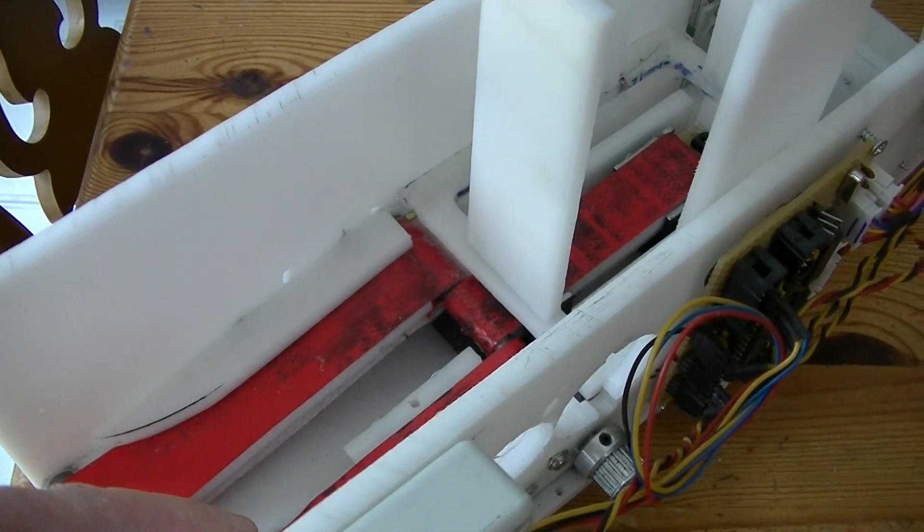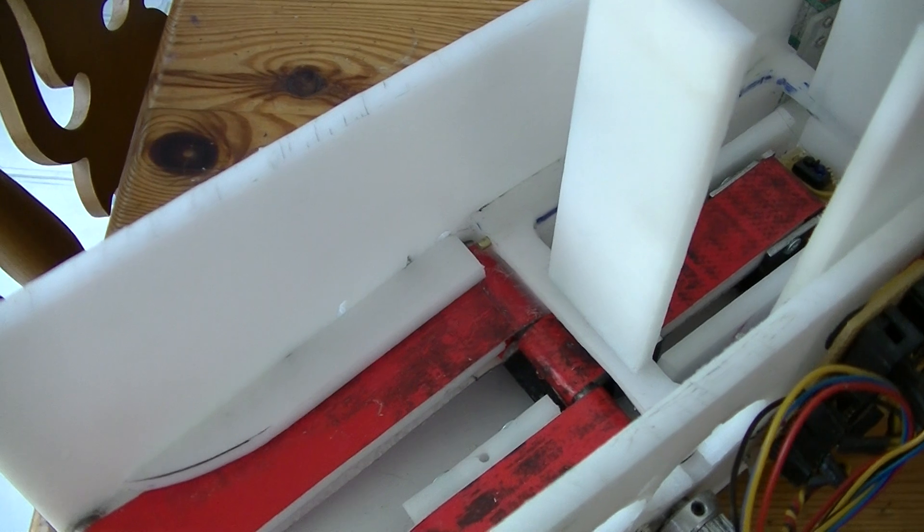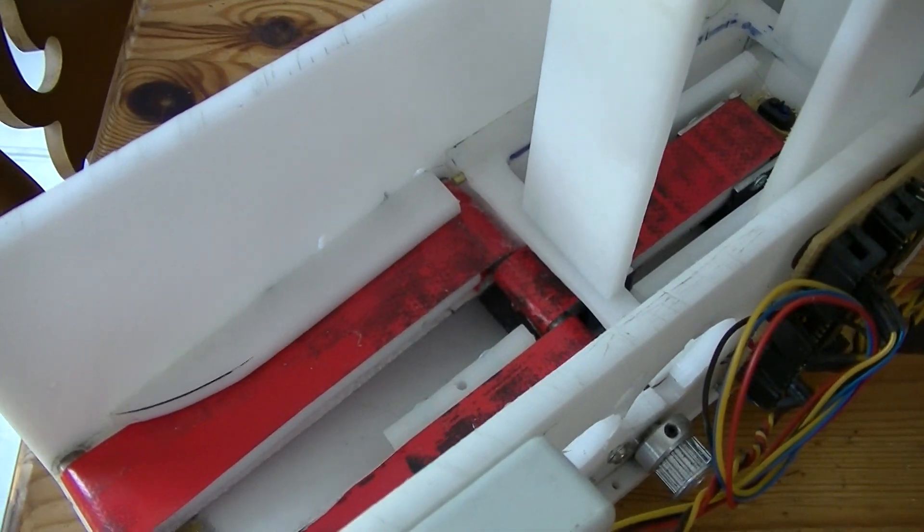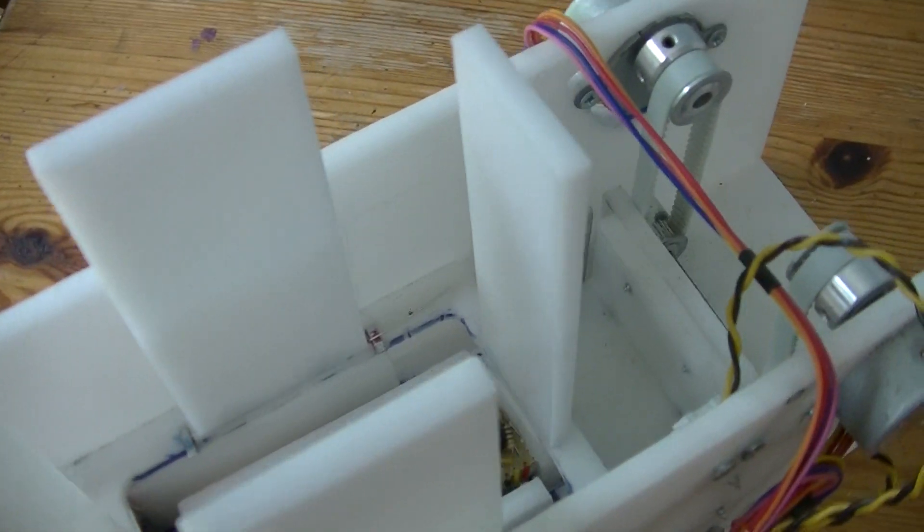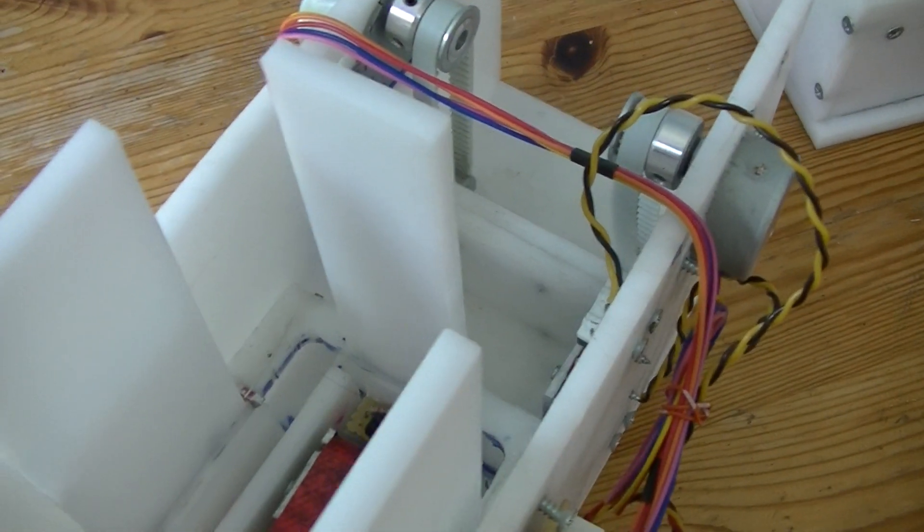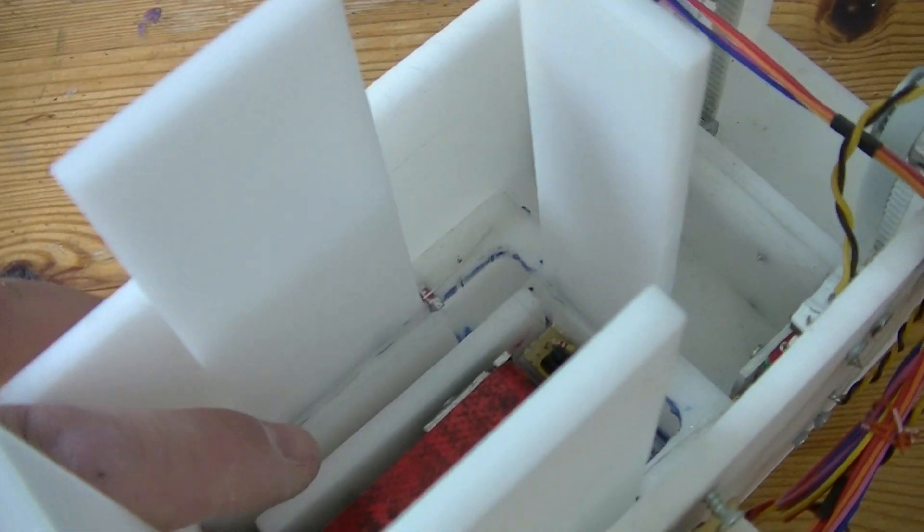Basically the sensor picks up that there's a card there, runs the motor, runs into this area here and then pushes up past these little catches.